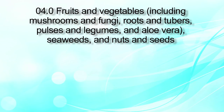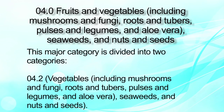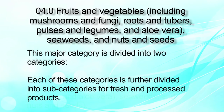You can also refer to our notes which have a detailed description. Category number 4 is fruits and vegetables, including mushrooms, fungi, roots, tubers, pulses and legumes, aloe vera, seaweeds, and nuts and seeds. In category 4, there are two major sub-categories: 4.1 is fruits, and 4.2 is vegetables including mushrooms, fungi, roots, tubers, pulses, legumes and aloe vera. Each of these categories is further subdivided into sub-categories.